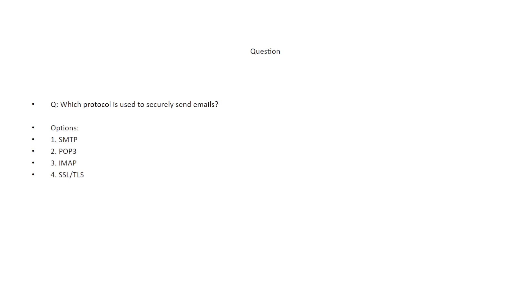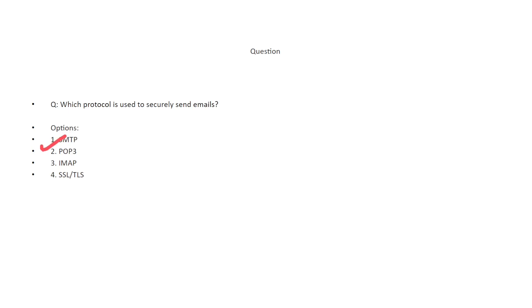Which protocol is used to securely send emails? The options are: SMTP, POP3, IMAP, and SSL/TLS. The correct answer is SMTP — Simple Mail Transfer Protocol. The correct answer is option number one.